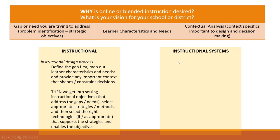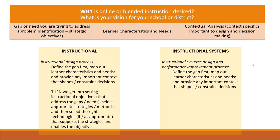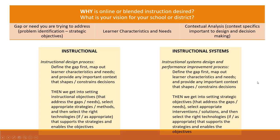In terms of instructional systems, we again start by defining the gaps and mapping out learner characteristics, needs, and contextual considerations. Then we get into setting strategic objectives that help address those gaps and selecting appropriate interventions or solutions, then selecting the right technology. It's essentially the same process — just at a more micro level versus a more macro level — and some of the interventions here are non-instructional interventions that support our ability to provide quality instruction.